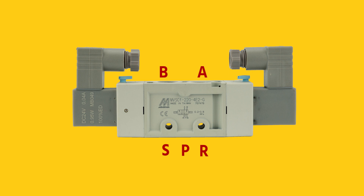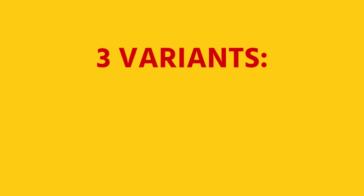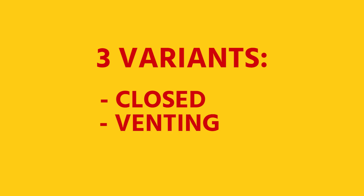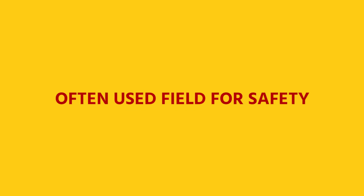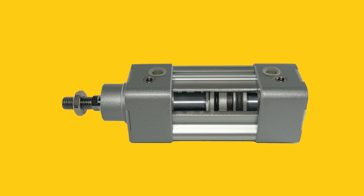Five/three-way valves are available in three variants: with closed center position, with venting center position, and with pressurized center position. This is often used in the field for safety — for example, to stop a double acting cylinder during power loss.